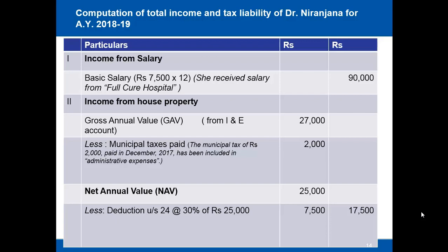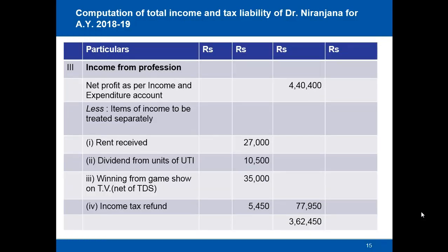For income from profession, the net profit per the income and expenditure account is rupees 4 lakh 40 thousand 400. We reduce items treated separately: rent of rupees 27,000 (covered under house property), dividend from UTI of rupees 10,500, winning from game show of rupees 35,000, and income tax refund of rupees 5,450. Total reductions are rupees 77,950, leaving income at rupees 3 lakh 62 thousand 450.